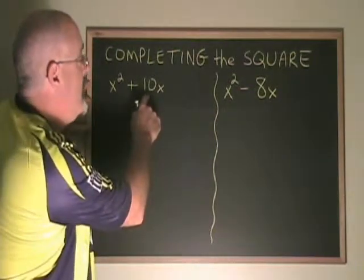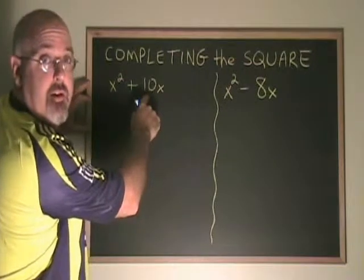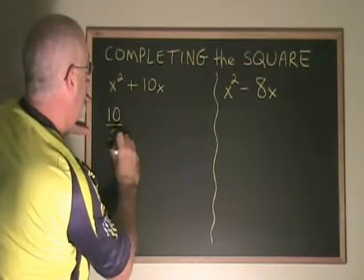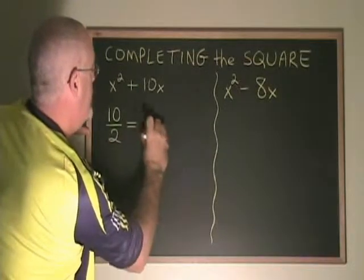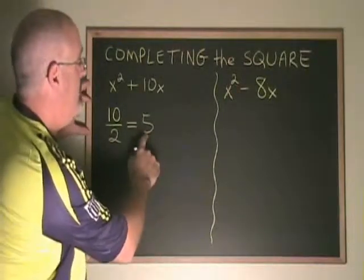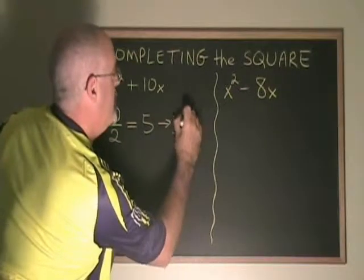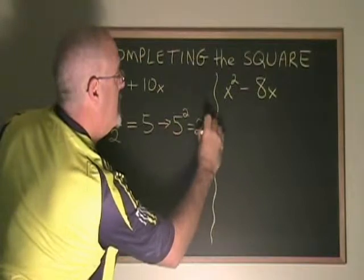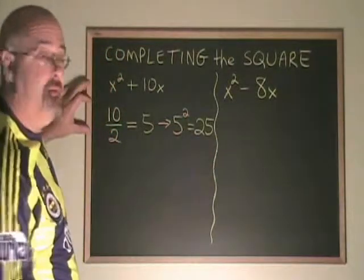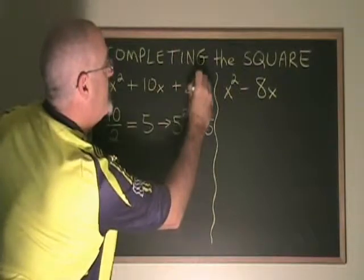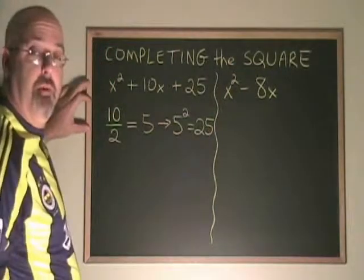If I take the coefficient of x, which in this case is 10, and I divide it by 2, then I take the answer, 5, and I square it, I get 25, and that is the number that I can put in this position to create a perfect square trinomial.